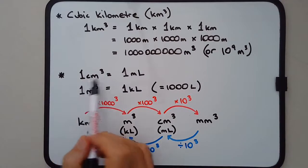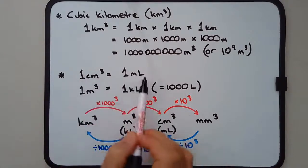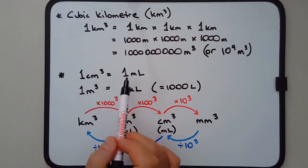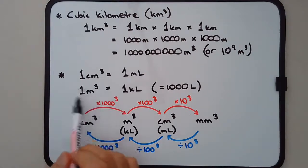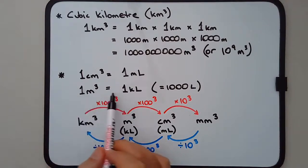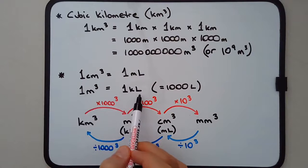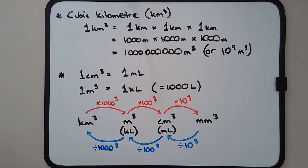The key bridge conversion is that one cubic centimeter is equivalent to one milliliter. Also, one cubic meter is equivalent to one kiloliter, or 1,000 liters. These two conversions allow us to move between units of volume and units of capacity.